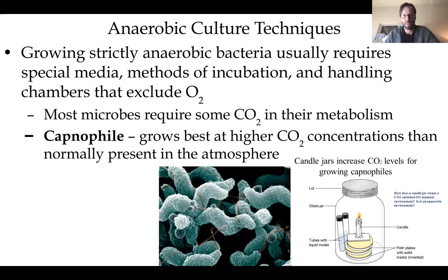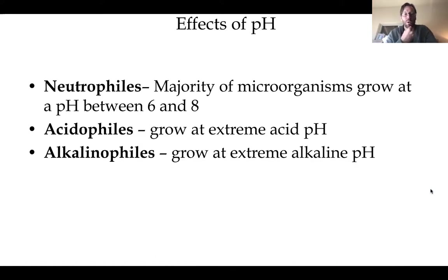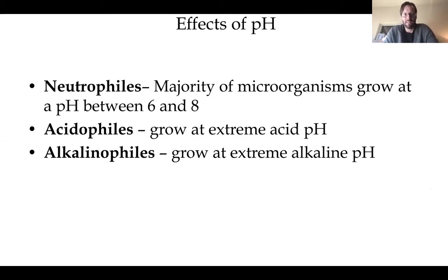Neutralophiles, as the name implies, grow at a neutral pH between 6 and 8. Acidophiles grow at a lower pH where conditions are acidic. Alkalinophiles grow at a higher pH where conditions are alkaline or basic.